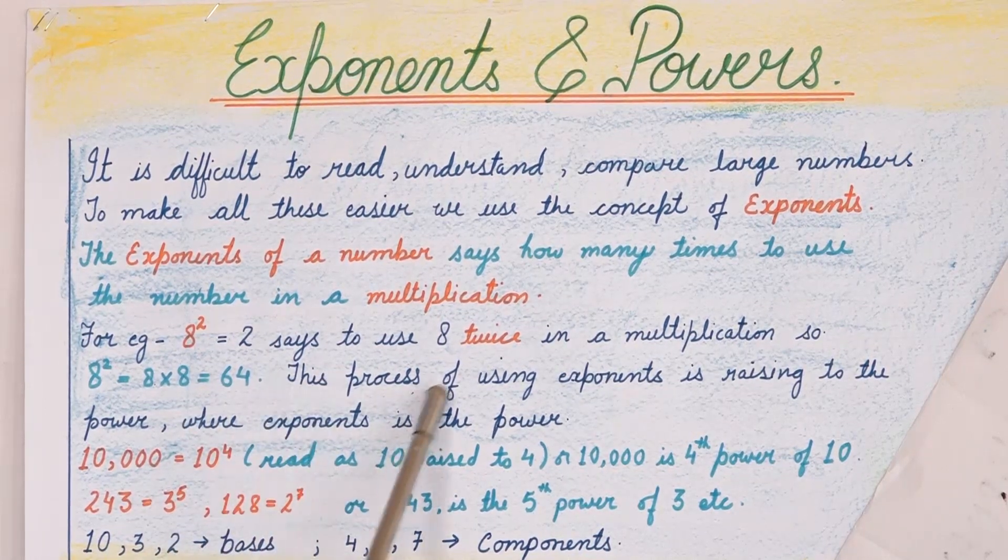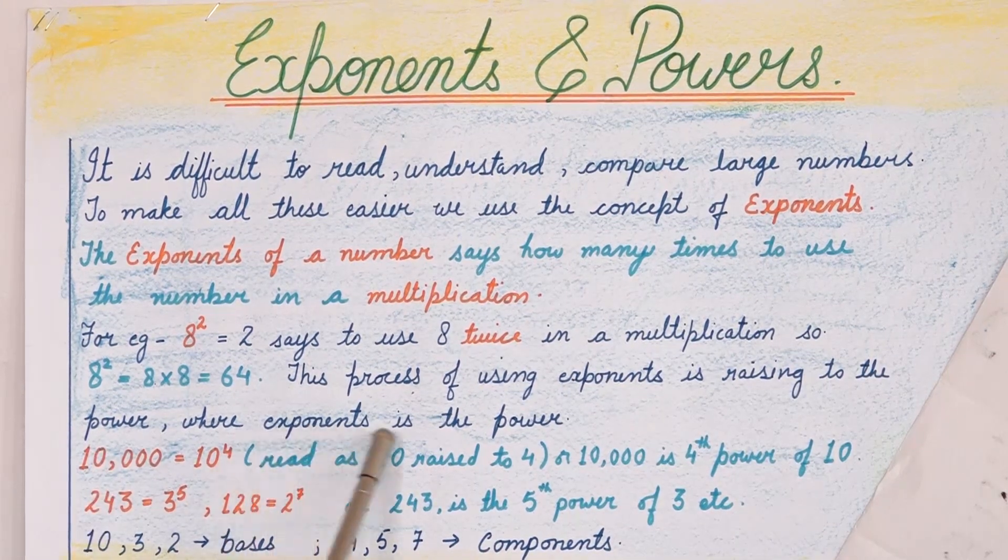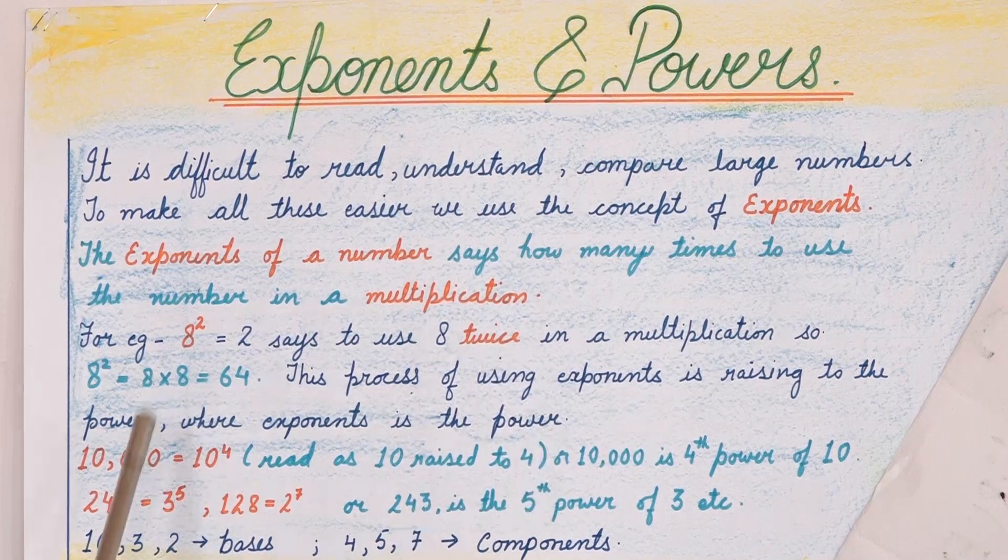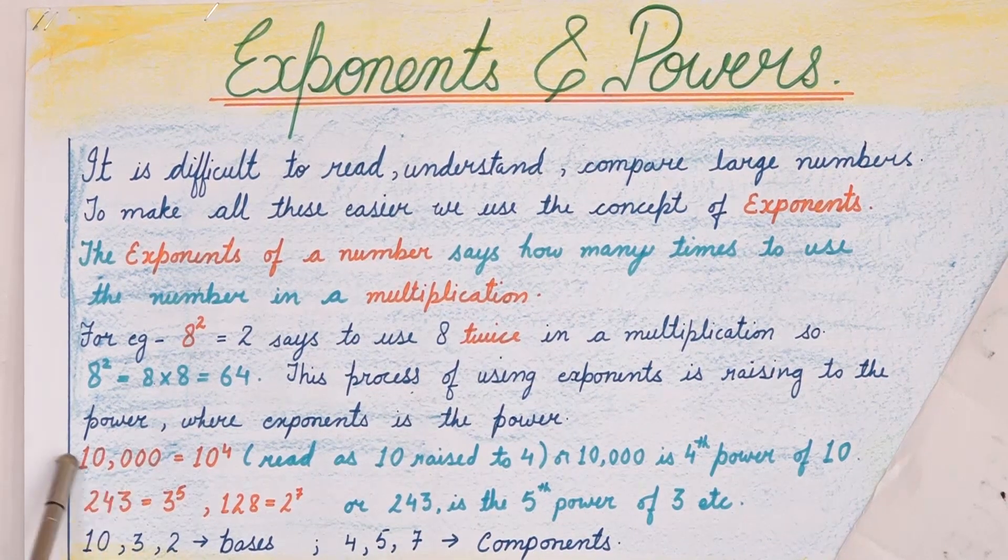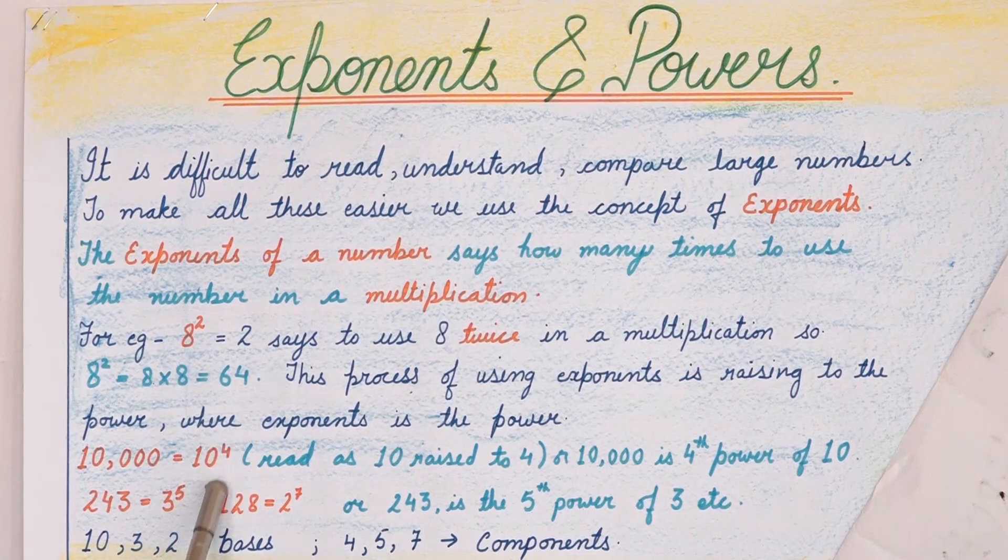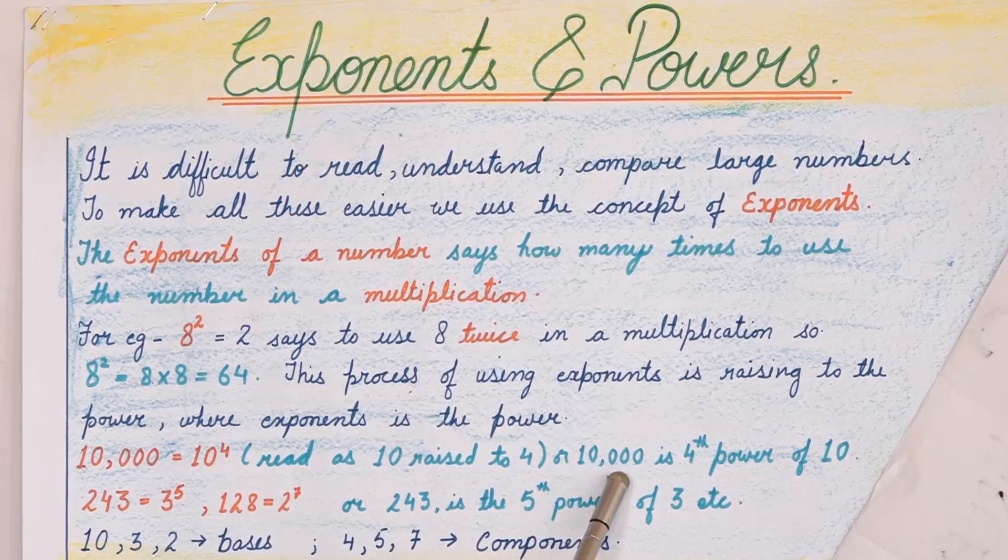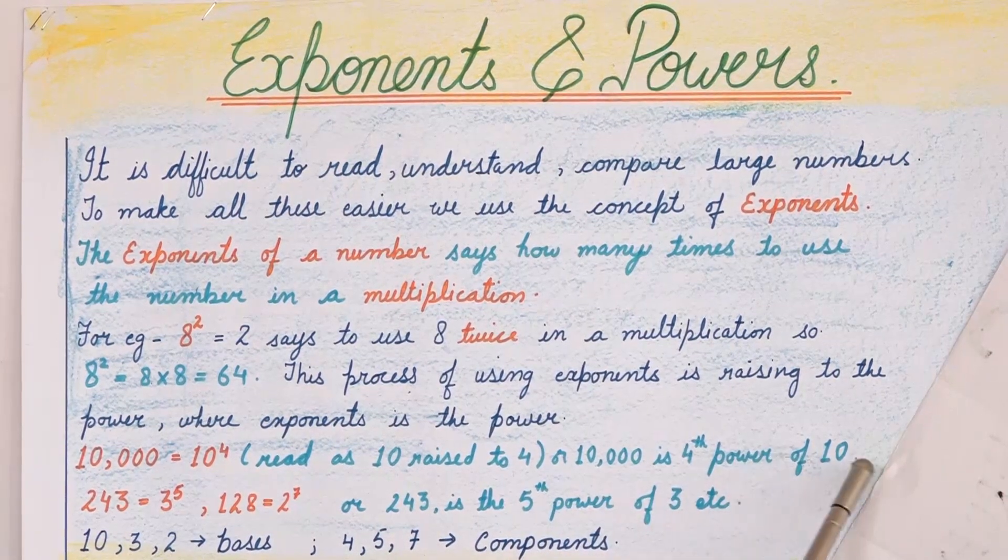This process of using exponents is raising to the power, where exponent is the power. Now 10,000. We can write 10,000 in exponential form as 10 raised to the power 4. How to read this? 10 raised to the power 4, or 4th power of 10.